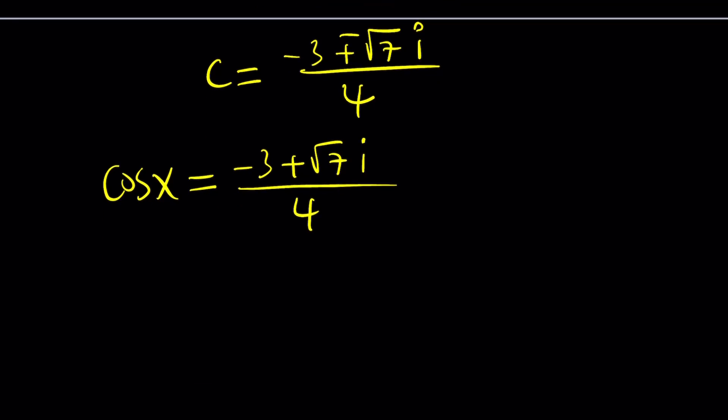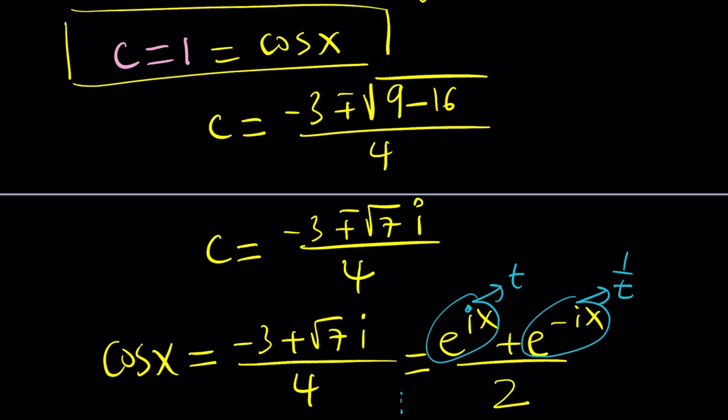So to be able to solve it, you can actually use an identity such as this one, and this comes from Euler's formula. E to the ix plus E to the negative ix divided by 2. And then you can definitely call this one something like t, this is going to be 1 over t, so on and so forth. And you'll get a quadratic in t, and then you can kind of use the logarithms and solve for x. But that's going to be very painful. But I'm going to leave it as an exercise for you guys.